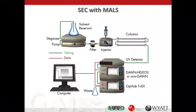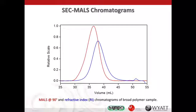The SEC-MALS setup is shown here. It is a regular SEC setup consisting of a pump, injector (typically an autosampler), and columns. Then we have mostly a refractive index detector — OptiLab TRX in this case. We can have a UV detector for samples that absorb UV light. And then we add the additional multi-angle light scattering detector — in this case the EOS, Helios, or miniDAWN. With this setup, we can get absolute molar mass for molecules eluting from the SEC columns.